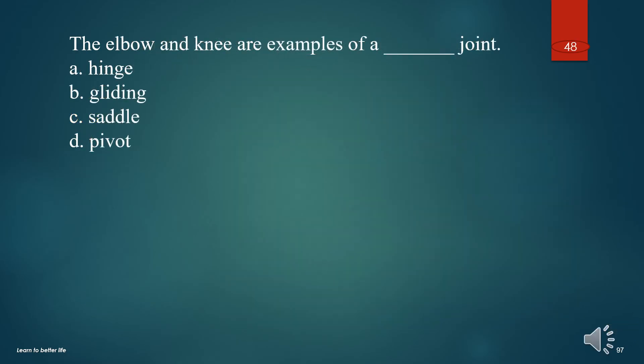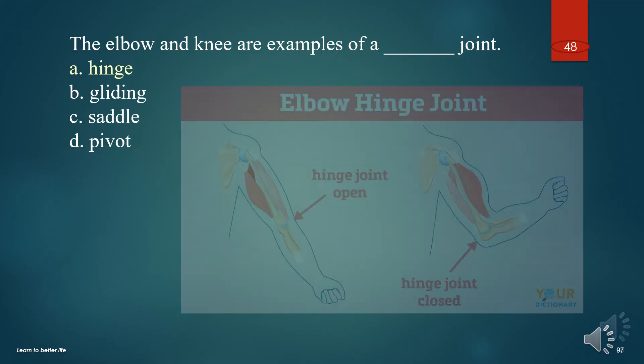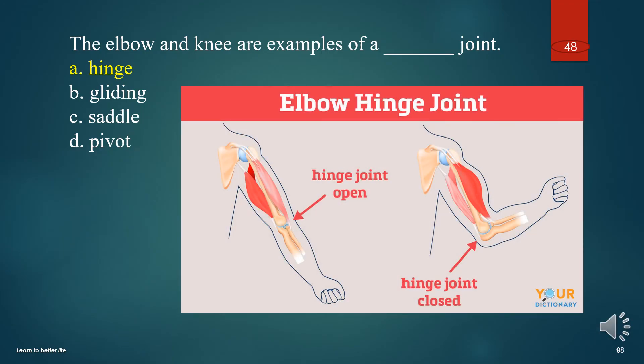The elbow and knee are examples of what type of joint? A. Hinge. B. Gliding. C. Saddle. D. Pivot. The answer is A. Hinge joint.